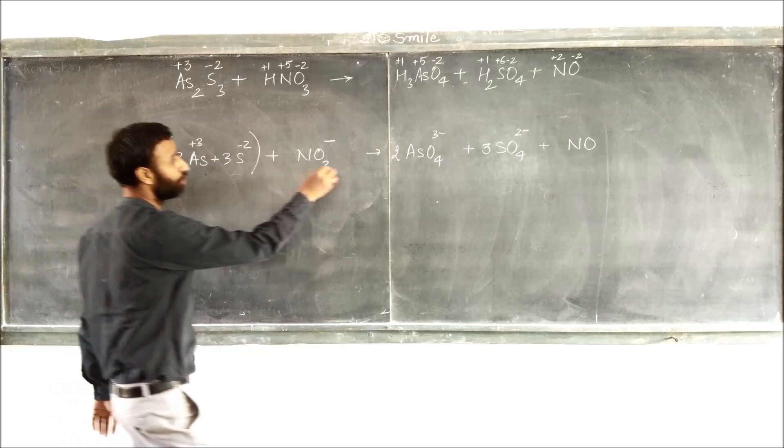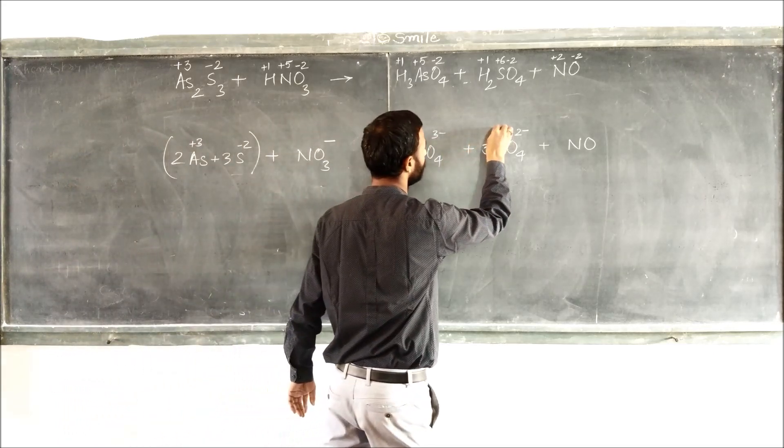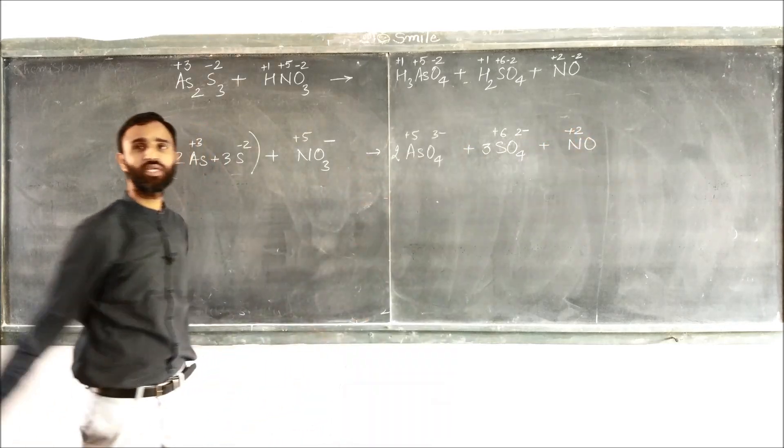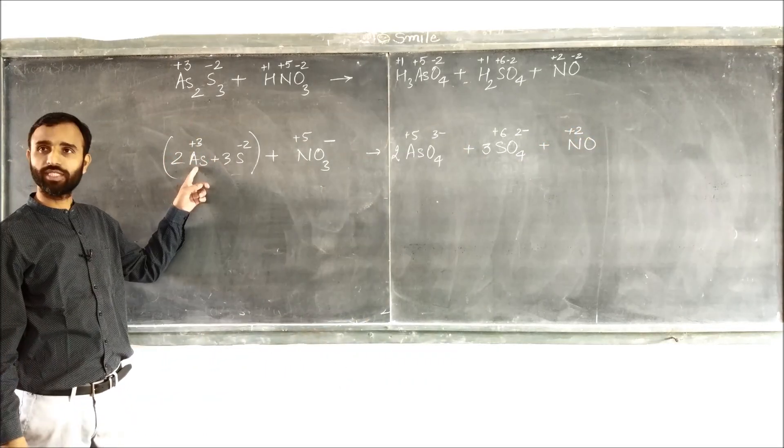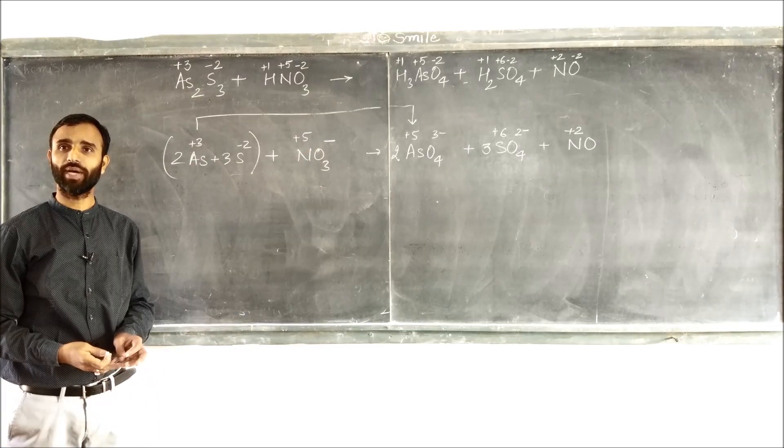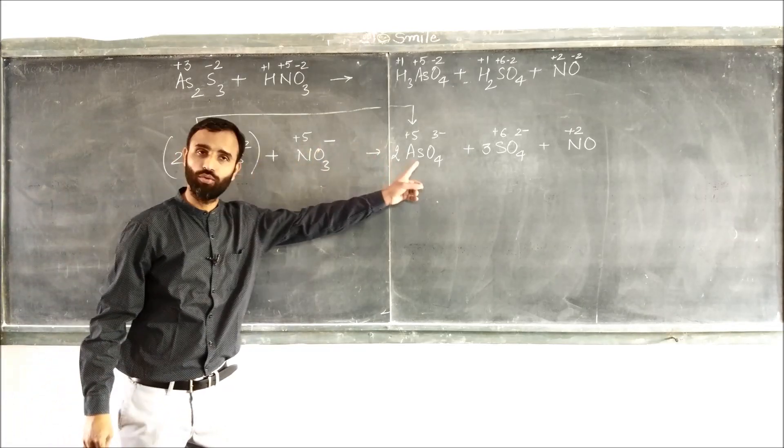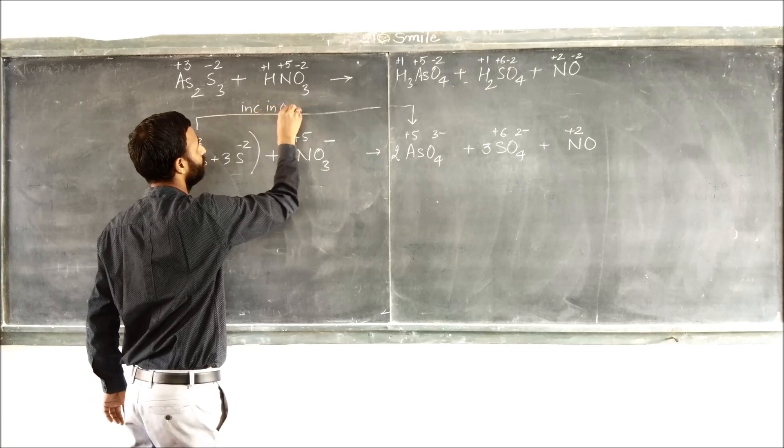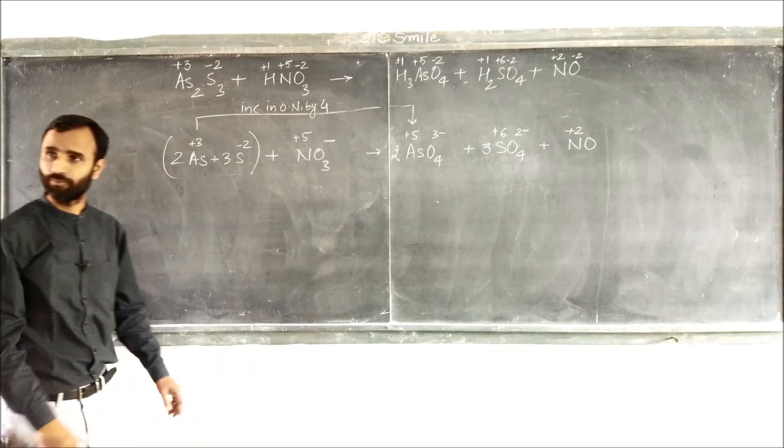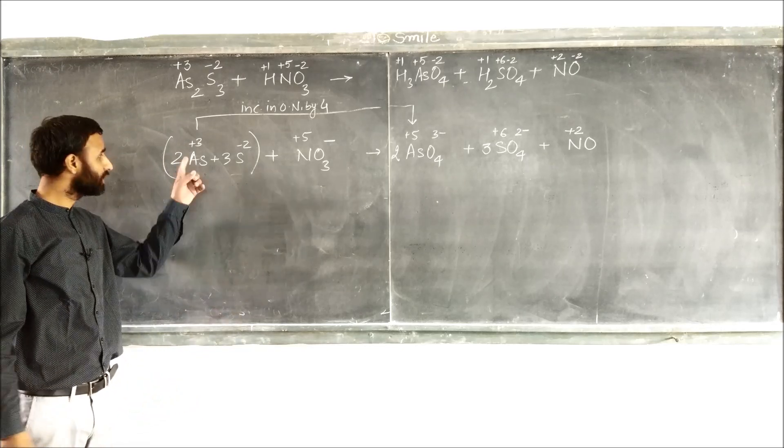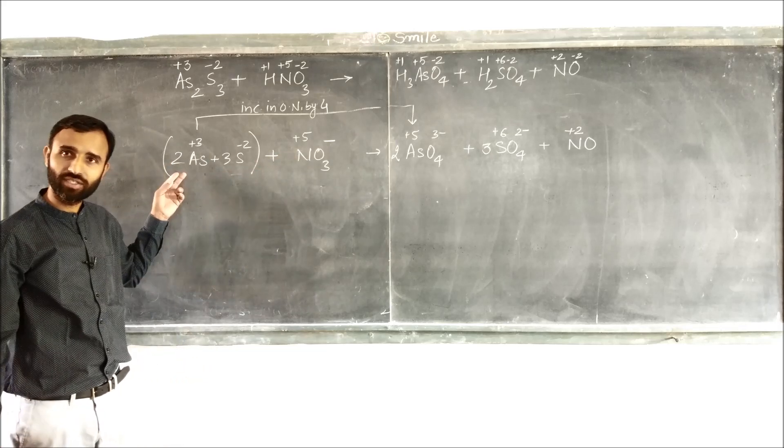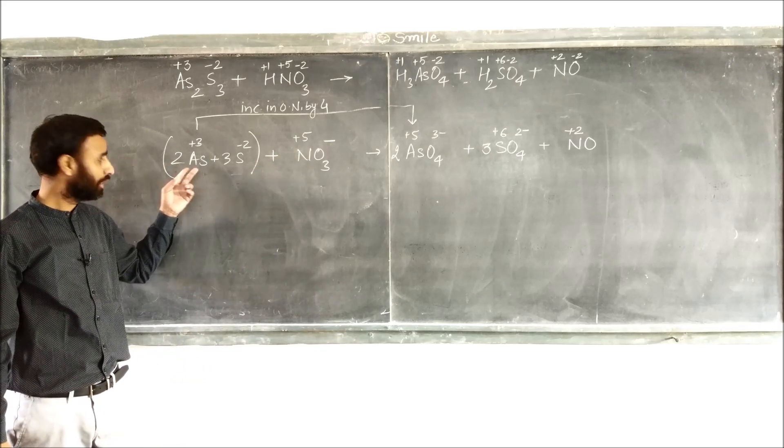Now oxidation number of only those atoms which undergo a change. Arsenic plus 3 to plus 5, increase in oxidation number 2 per arsenic. There are 2 arsenic atoms, so total increase of 4.